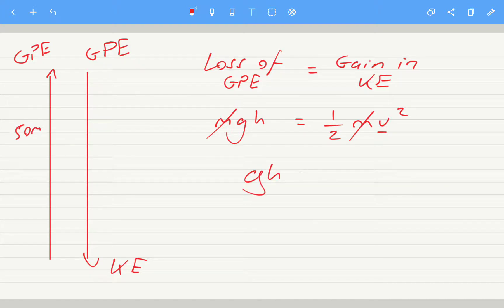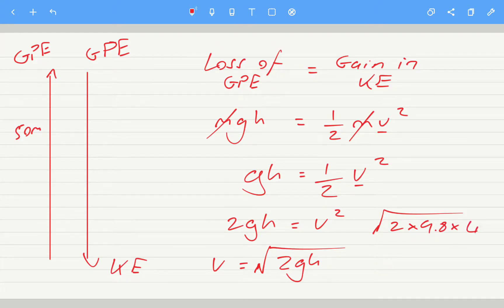So we've got gh equals a half speed squared. So to get speed on its own, make it the subject. We need to do the opposite of halving, which is times by 2, so we get 2gh equals speed squared. And then finally, the speed is going to be equal to the square root of 2 times g times the height. So let's put some numbers in. So we need the square root of 2 times 9.8 times 50, and that gives us 31.3 meters per second.